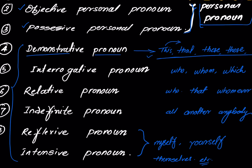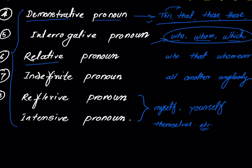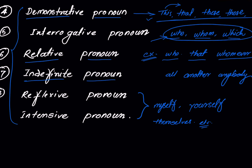Interrogative pronouns include: who, whom, which — and there are more, these are just some of them. Relative pronouns include: who, whom, that, whoever — these are examples of relative pronouns. Indefinite pronouns are: all, another, anybody, somebody, some — these types of words are all indefinite pronouns.